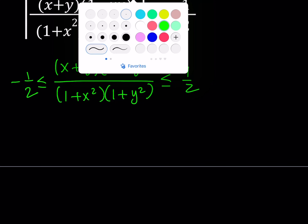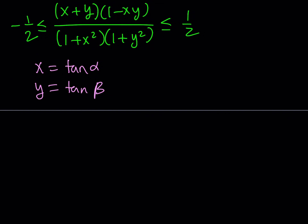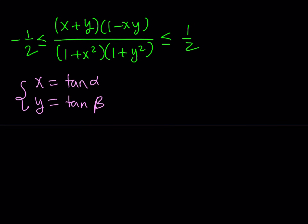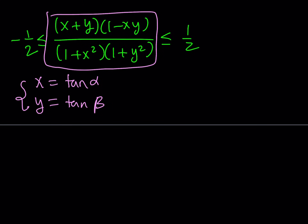I'm going to be using substitution, and since x and y are real numbers, we can do the following: replace x with tangent alpha and y with tangent beta. Alpha and beta don't have to be different — they can be the same if x and y are the same, or they could be different. We're going to substitute this into each one of these expressions, simplify each one, put it all together, and then prove that the expression in the middle is between negative 1 half and positive 1 half.